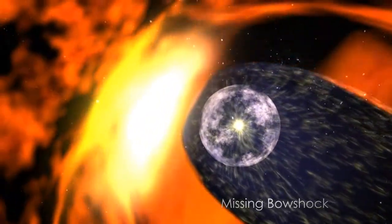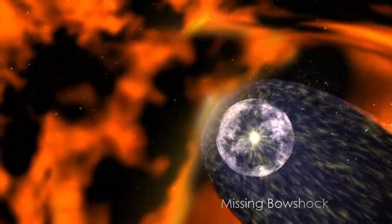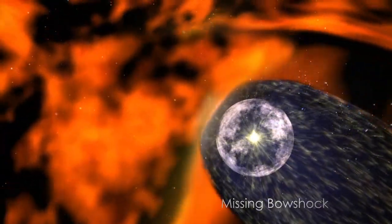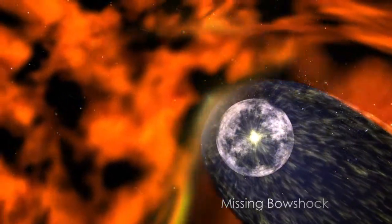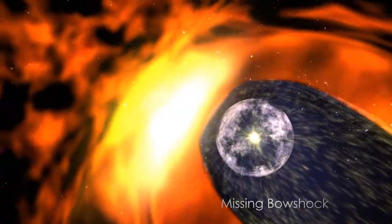New measurements by IBEX have suggested that there is no bow shock to the heliosphere. The previous understanding of the boundary of the heliosphere was that outside the influence of the sun, a shock wave was formed by the entire heliosphere pushing through the interstellar material around it.